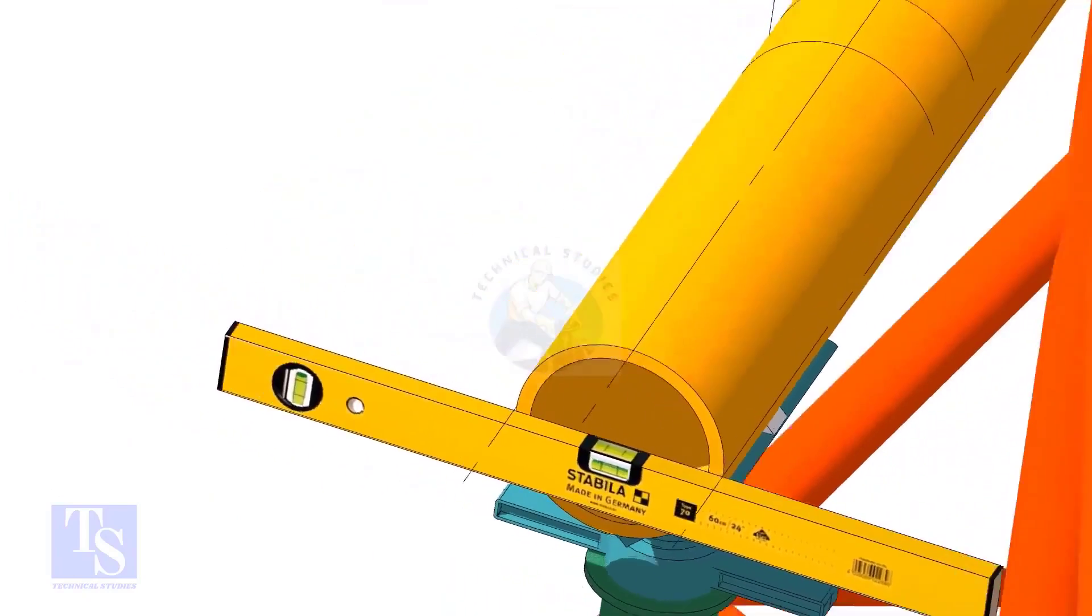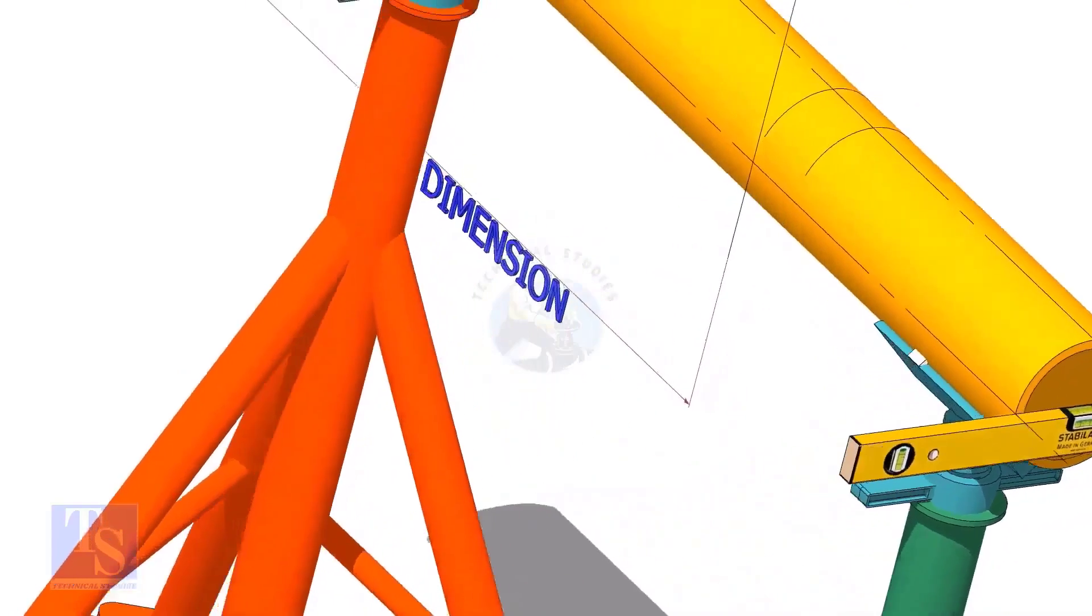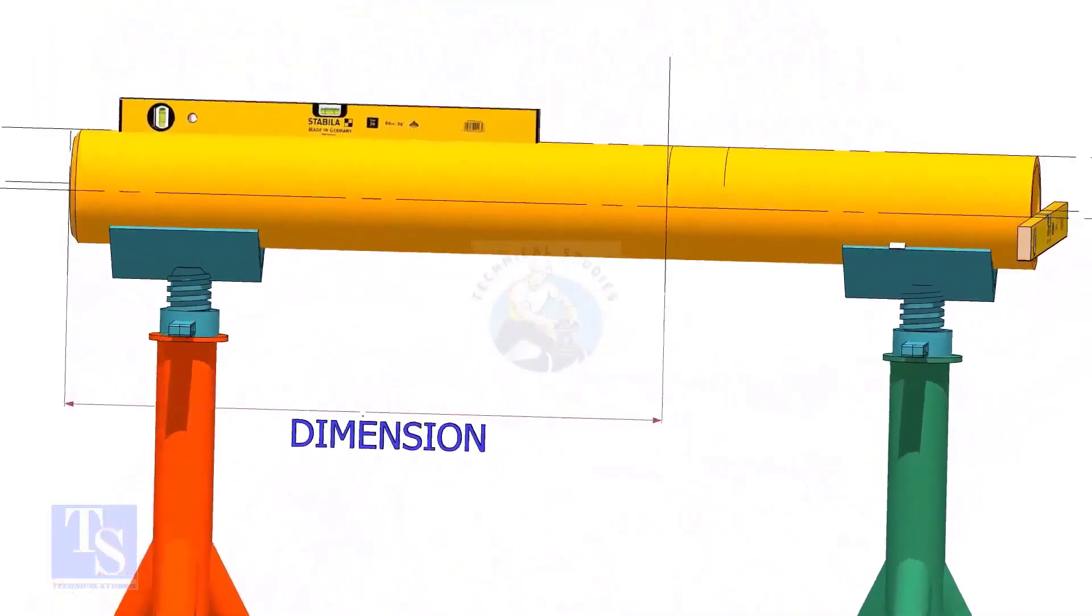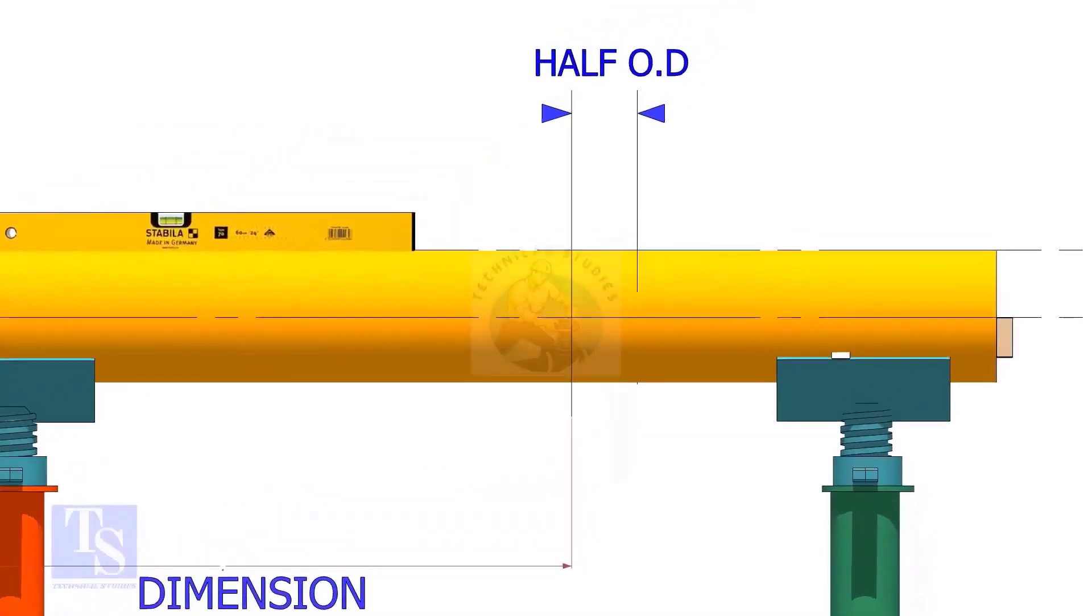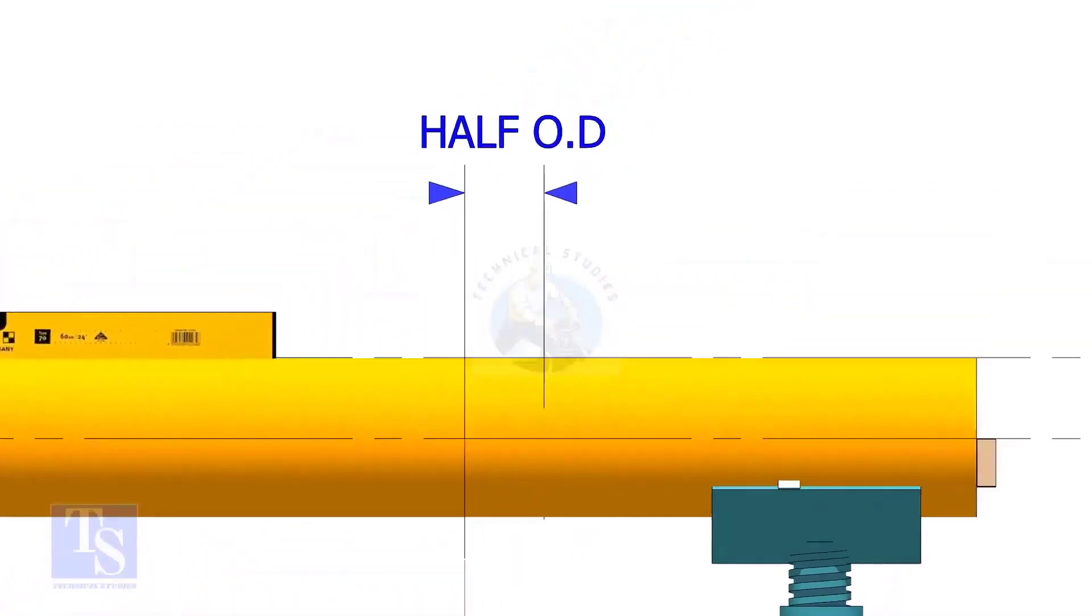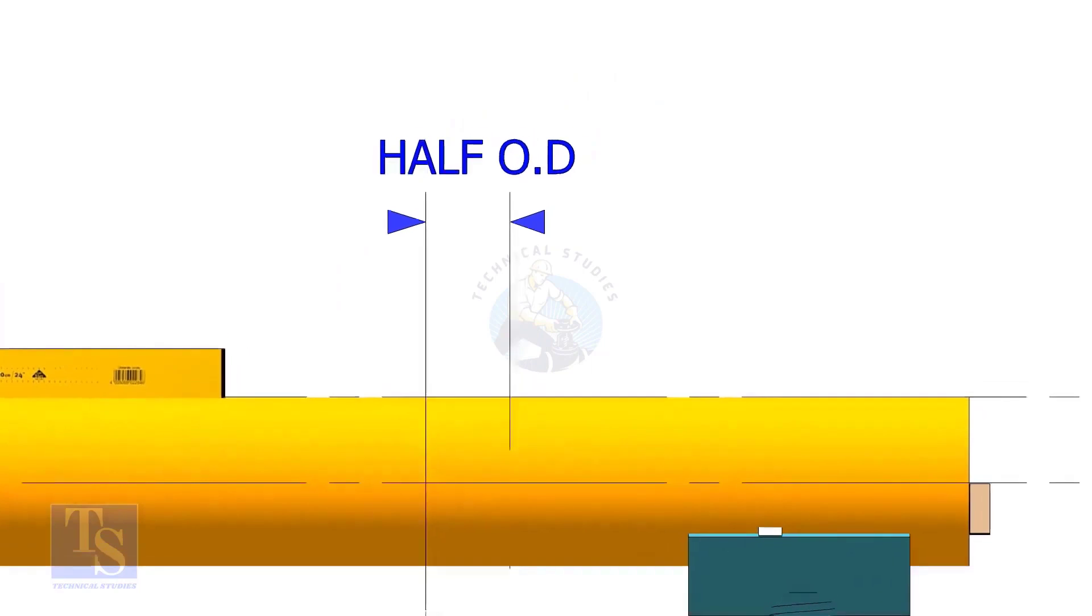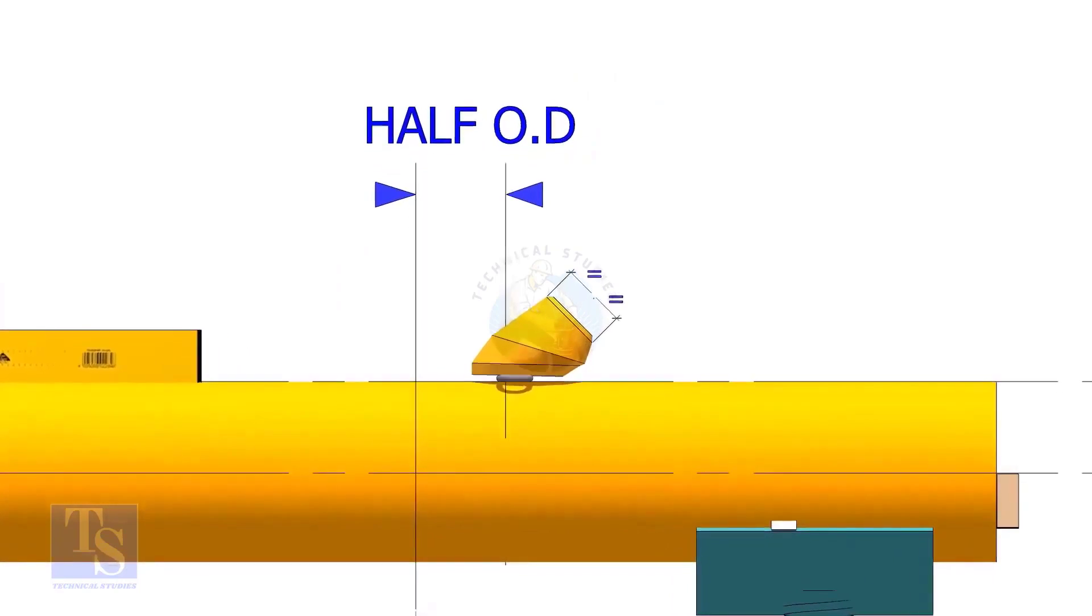Mark the center of the laterolette as per the drawing. Mark half OD of the header in the direction of the laterolette on the top of the pipe. This line is actually for inspection purposes only. Put the laterolette on the marking as shown. Don't forget to put the gap rod.